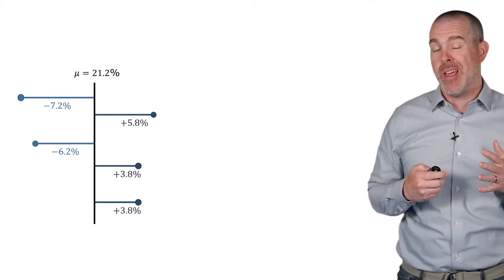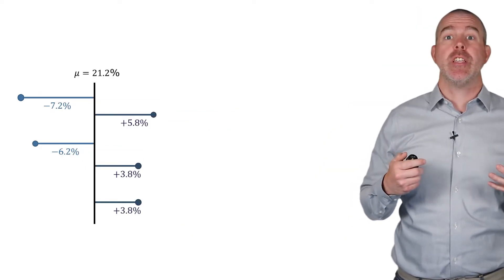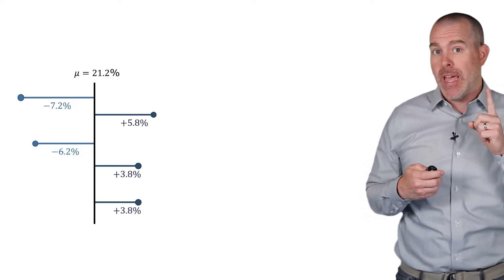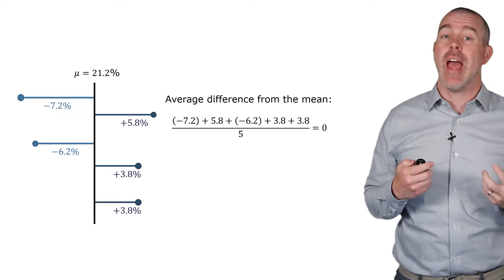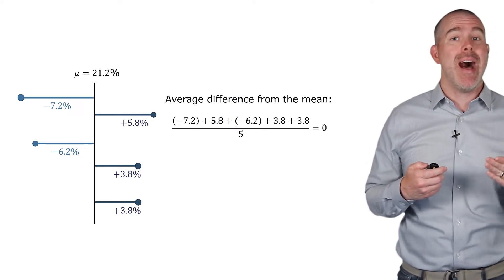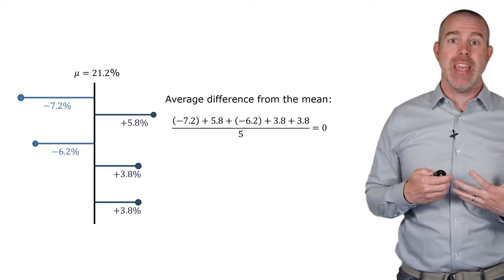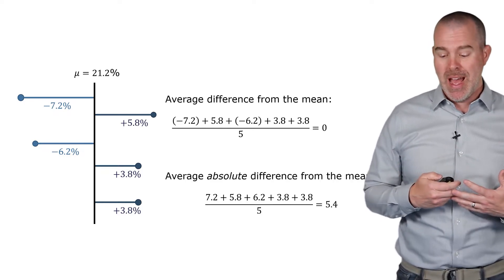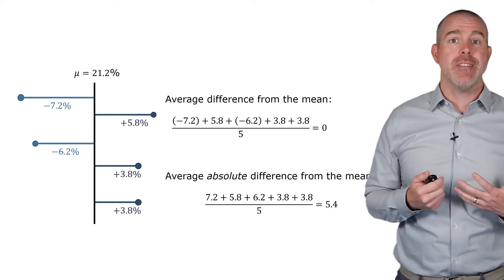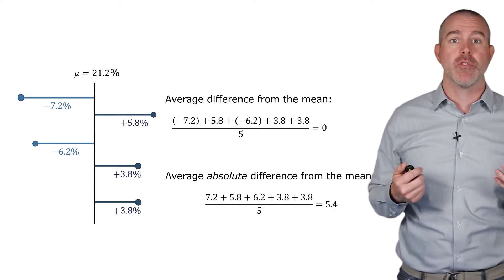Let's focus just on the numbers here. One kind of initial attempt you might think is I'll just average these differences from the mean. The problem is some of them are negative, some of them are positive. So the average difference is just zero. What you could do is make them all positive. Think of a distance. The average distance from the mean is 5.4. That has meaning. That is actually a reasonable way to describe this.